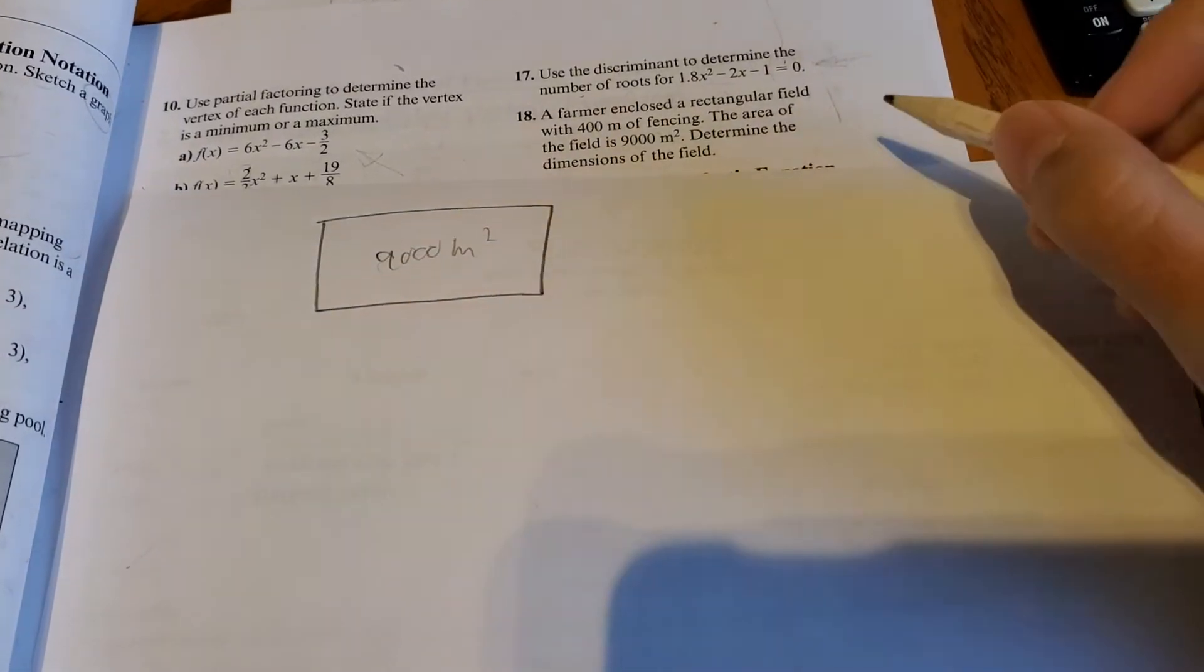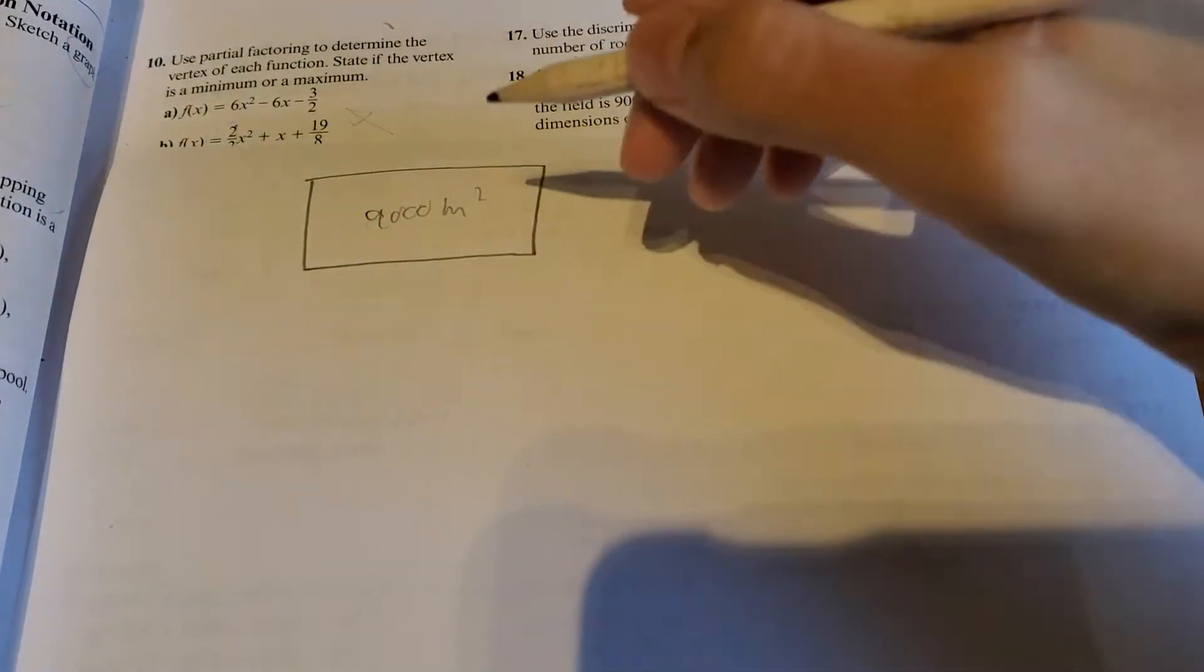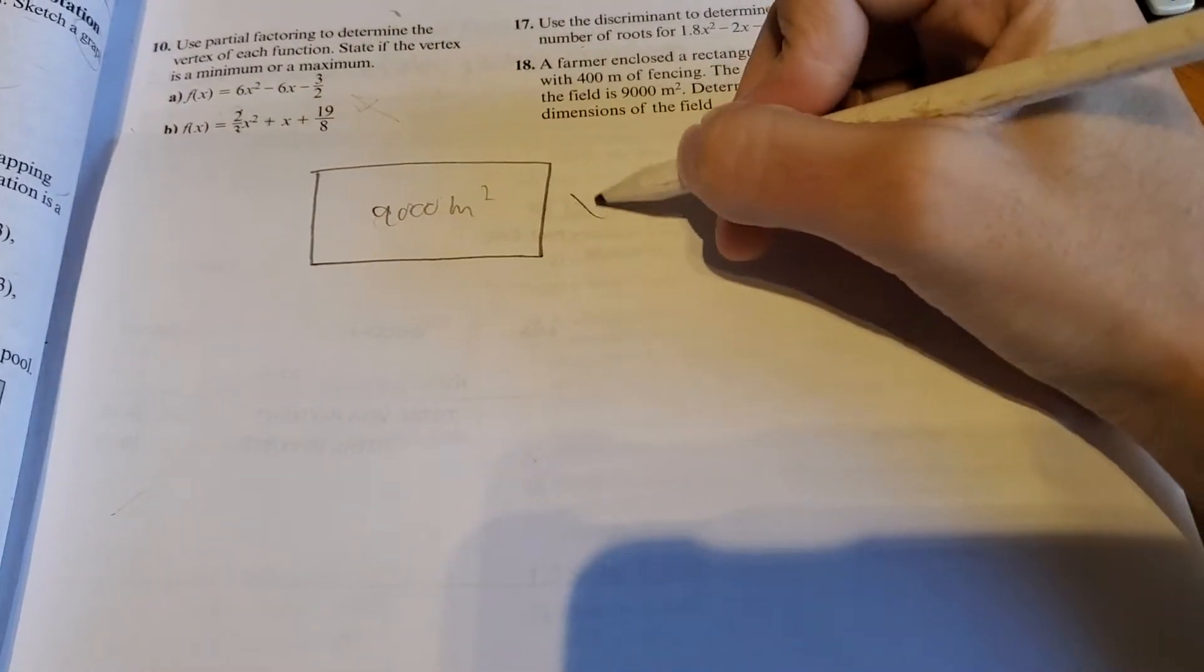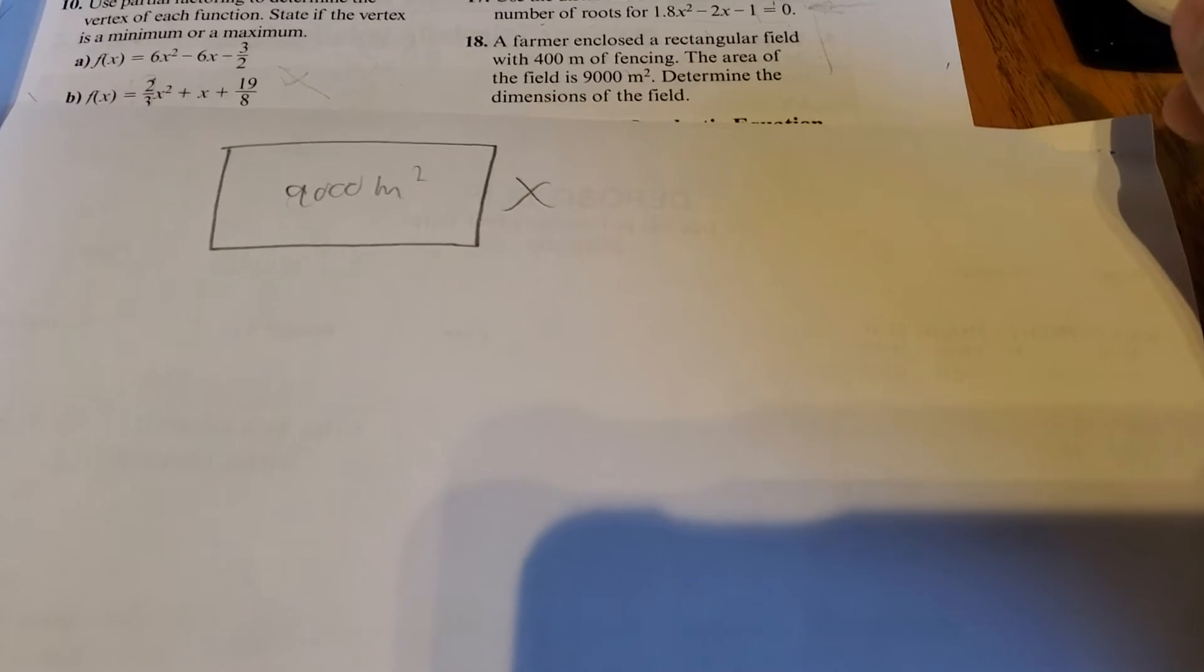So we know that the length times the width is 9,000 meters squared. So let's call the width x. And we know the perimeter is 400 meters.